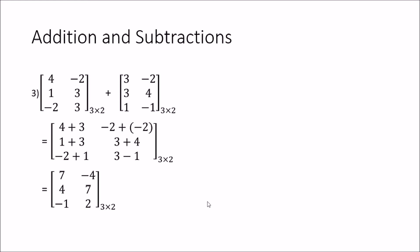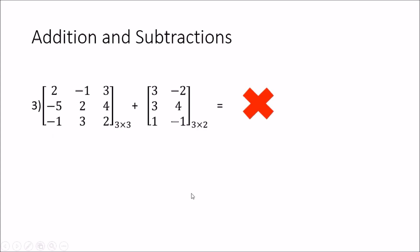The next example shows addition of two 3 by 2 matrices. You don't need square matrices to add or subtract — any matrices work as long as their dimensions are the same. Both matrices here are 3 by 2, so we can add them. The (1,1) elements: 4 plus 3 equals 7. The (1,2) elements: −2 plus (−2) equals −4. The (2,1) elements: 1 plus 3 equals 4. Continuing this way gives the final answer, which is also a 3 by 2 matrix.